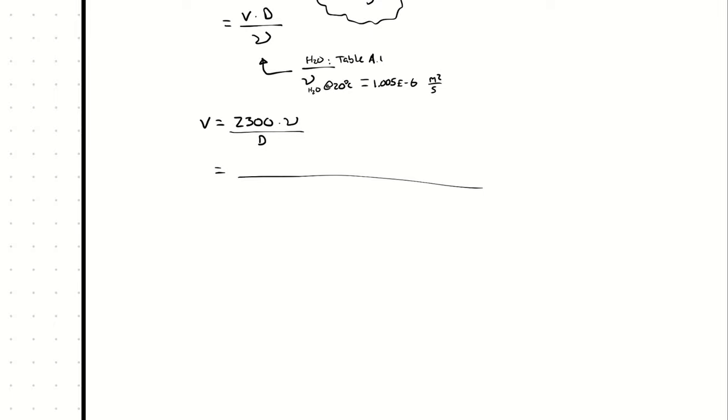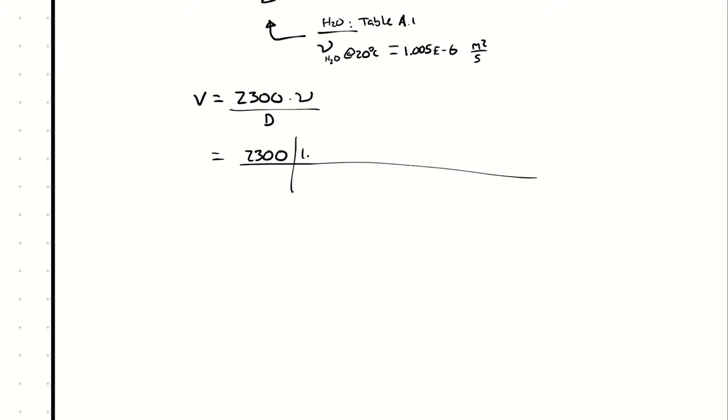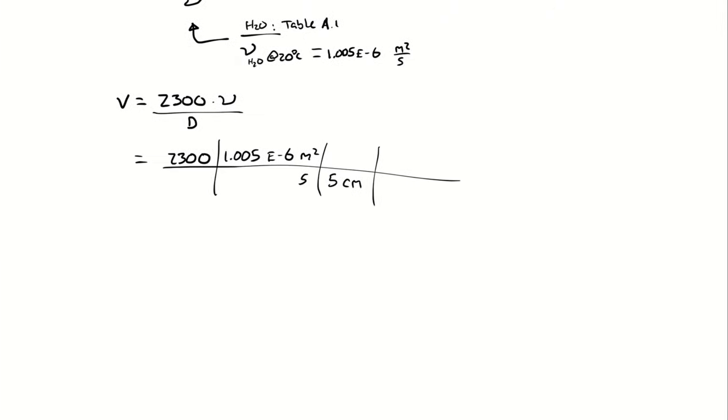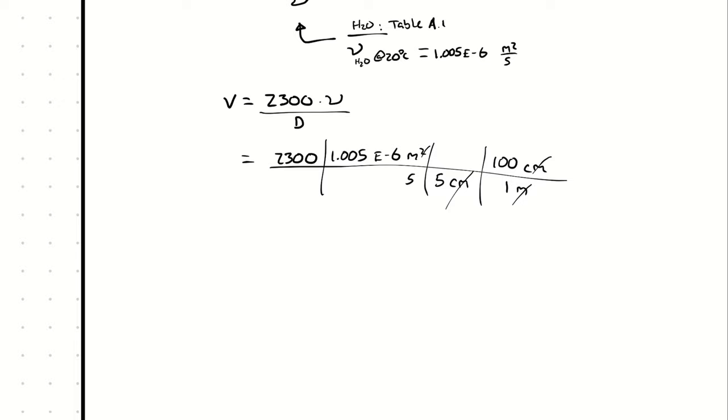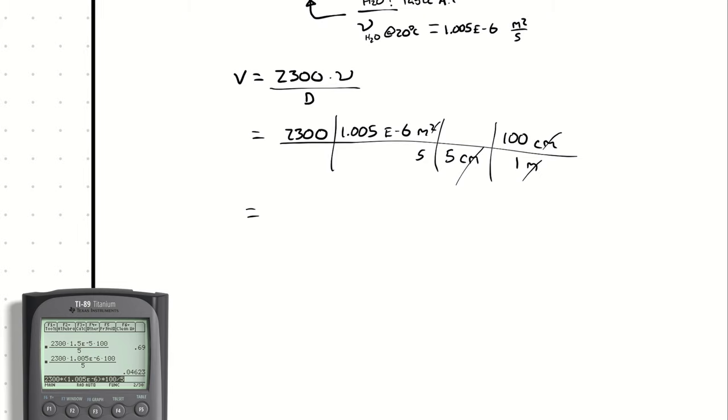Then when we take 2,300 times our kinematic viscosity divided by diameter, we will end up with the velocity again. And just like before, we have to convert centimeters to meters in order to yield an answer in meters per second. And just like before, I can try to get my calculator to cooperate. We get a velocity of 0.04623.